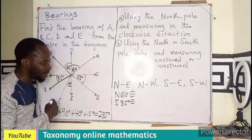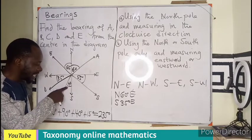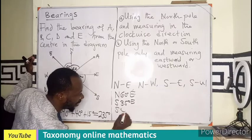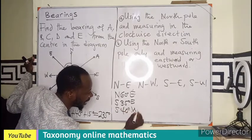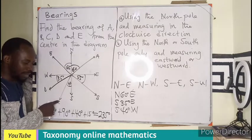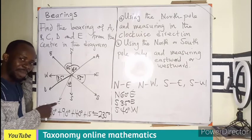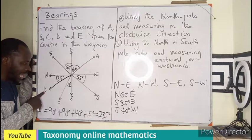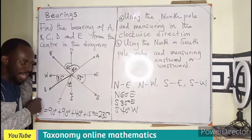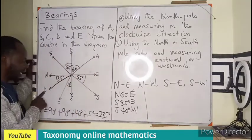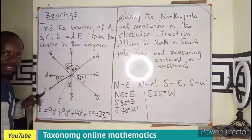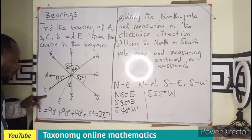For point C, this is an acute angle made with the south, so the bearing is S40°W — measuring 40 degrees towards the west, and you will meet point C. For point D, the angle D makes with the south is 50 plus 40 equals... that is going to be 55 degrees. So the bearing of point D is S55°W — south, moving 55 degrees towards the west.